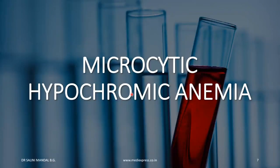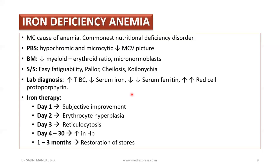Starting with microcytic hypochromic anemia, the first and most important is iron deficiency anemia — the most common cause of anemia worldwide and in India, and the most common nutritional deficiency disorder. Iron is absorbed almost exclusively in ferrous form, mainly from the duodenum and proximal jejunum. In adults, iron is distributed mainly as hemoglobin at 65%, transferrin at 0.5%, and heme and non-heme enzymes at 0.5%.